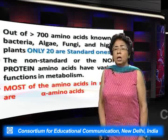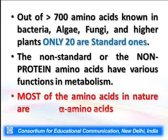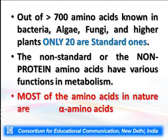Nowadays, more than 700 amino acids are known, occurring in bacteria, algae, fungi, and higher plants. But out of these 700, only 20 are standard ones — meaning these 20 are used in protein synthesis. The others are non-standard or non-protein amino acids and play various functions in metabolism. Most naturally occurring amino acids are alpha amino acids.